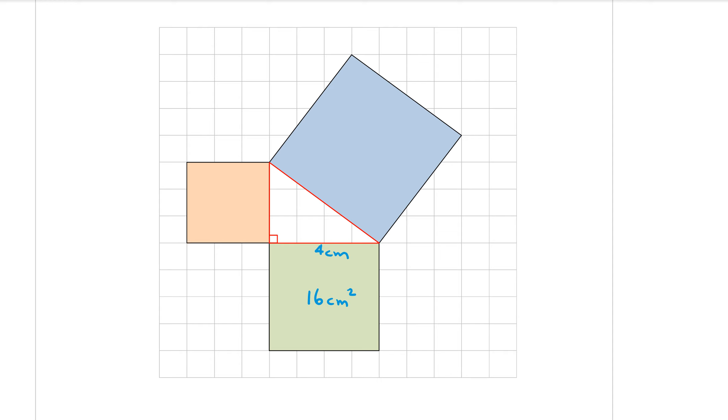Let's also look at this orange one over here. If we count the squares, one, two, three, the side length is three centimetres, which means the area of the square is three times three, which is nine centimetres squared.